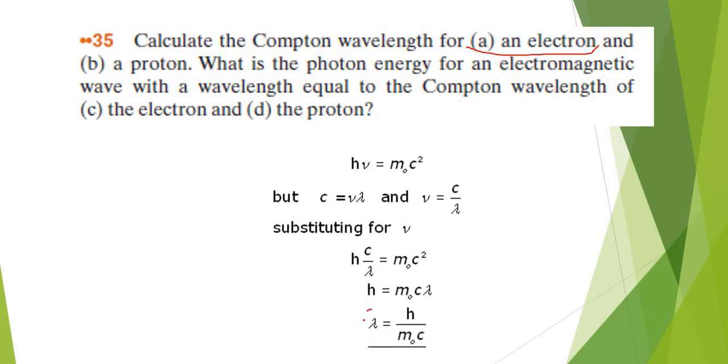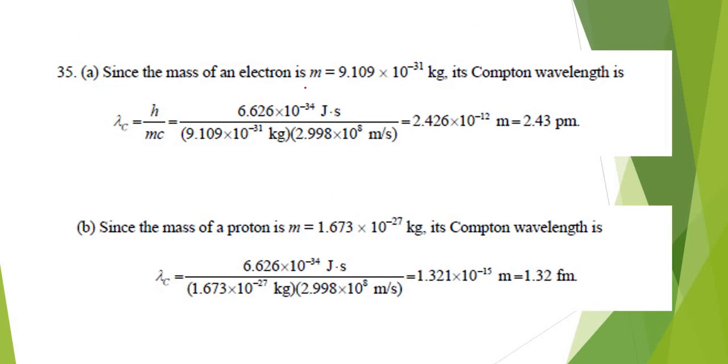Mass of electron is m equals to 9.11 times 10 to the power of negative 31 kilograms. Compton wavelength is, you just substitute this formula. Planck constant and mass of electron and the speed of light in vacuum. So you're going to have this 2.43 picometer just like previous question.